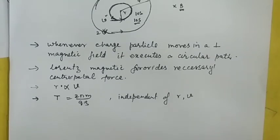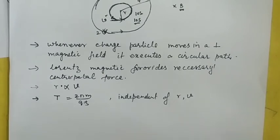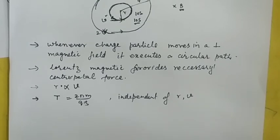In summary: first, a charged particle moving in a perpendicular magnetic field executes a circular path. Second, the Lorentz magnetic force provides the necessary centripetal force. Third, the radius of revolution r = mv/(QB) is directly proportional to the velocity. And finally, the time period T = 2πm/(QB) is independent of the radius of revolution and the velocity of the charged particle.